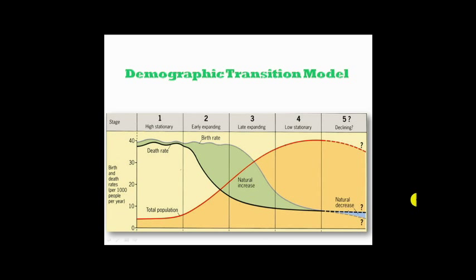Countries across the world are in different stages, and all countries eventually pass through all stages. England was the first country to pass through the demographic transition, which took approximately 200 years. Some countries such as Japan started the process later than England but completed it in less than half the time. Countries like China, Brazil, and Thailand have passed through the demographic transition model very quickly due to fast social and economic change. Some countries, particularly African countries, appear to be stalled in the second stage due to stagnant development and the effects of AIDS.